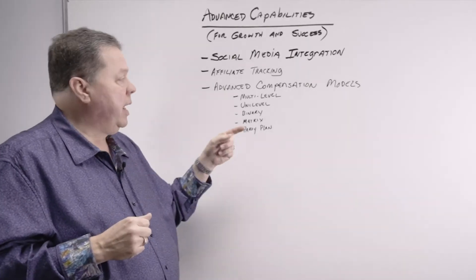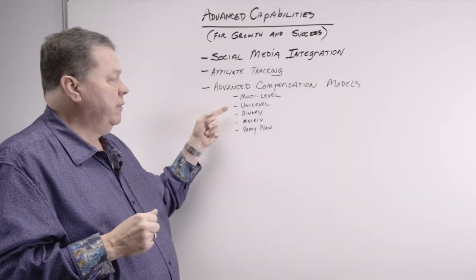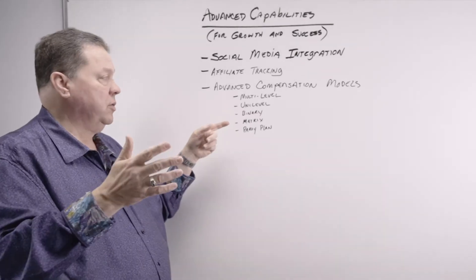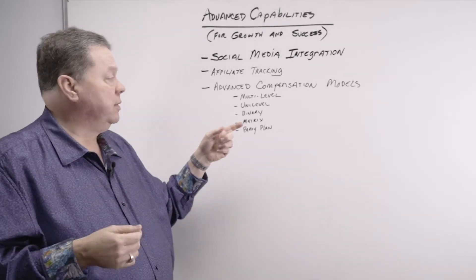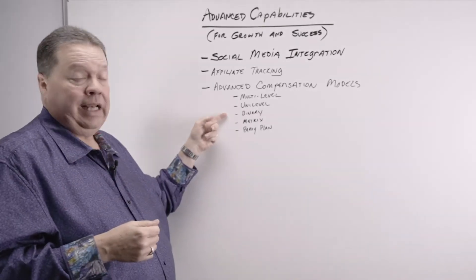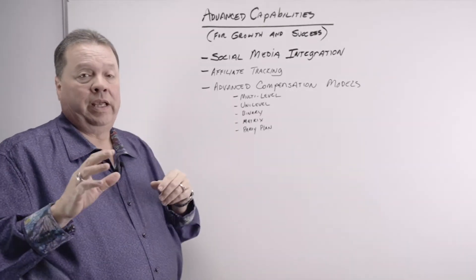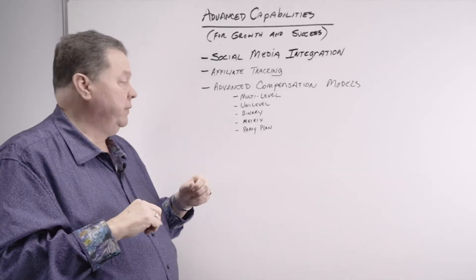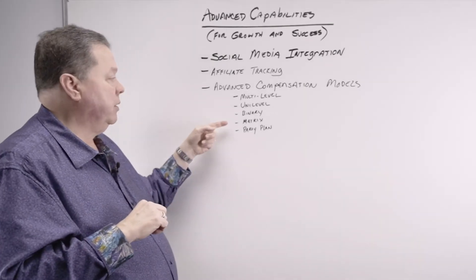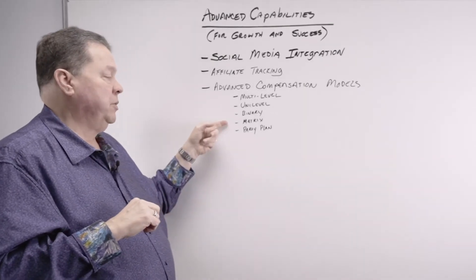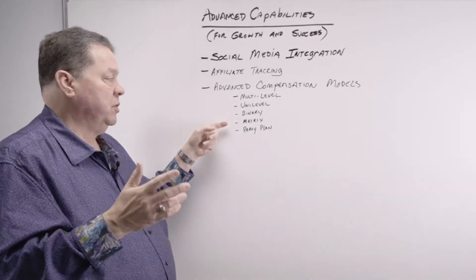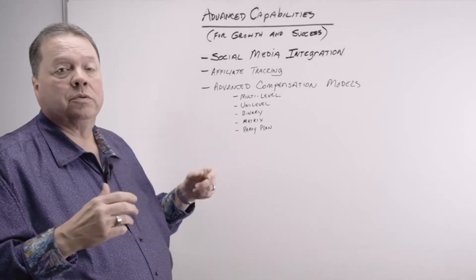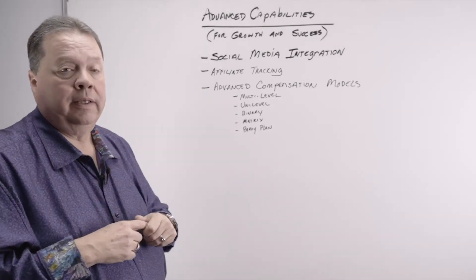Multi-level, which we talked about, uni-level, single-level payouts — also known as direct sales — binary, which is something we haven't discussed yet but we will in a future video, matrix plans, force matrix, and of course party plans.